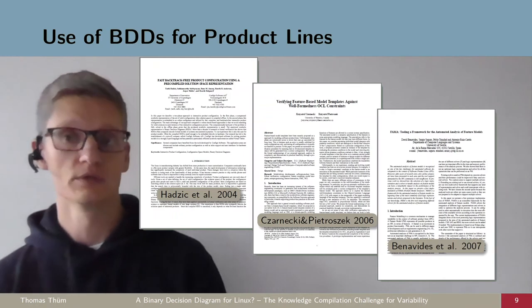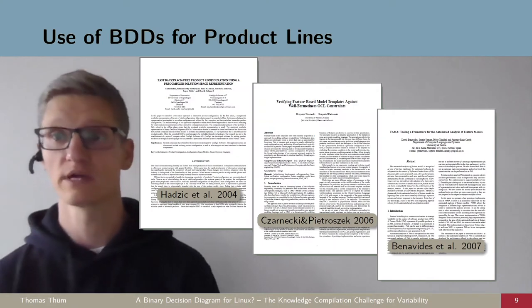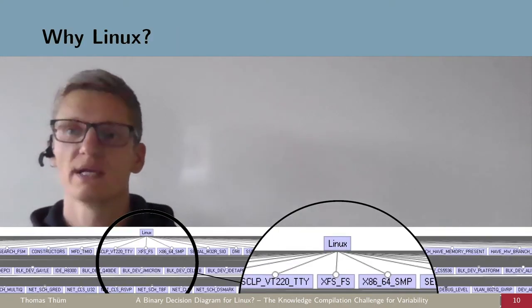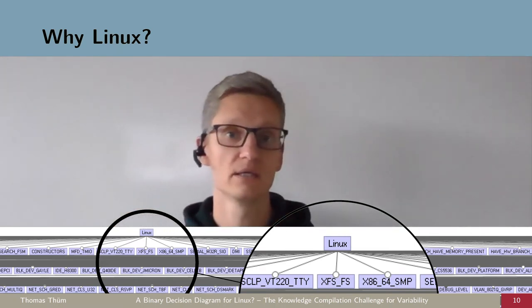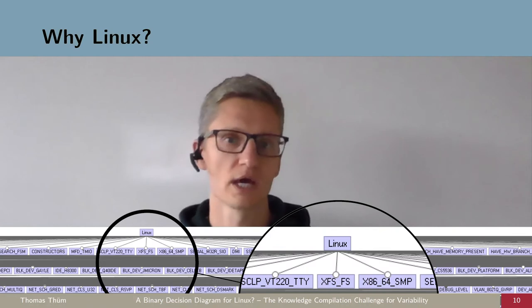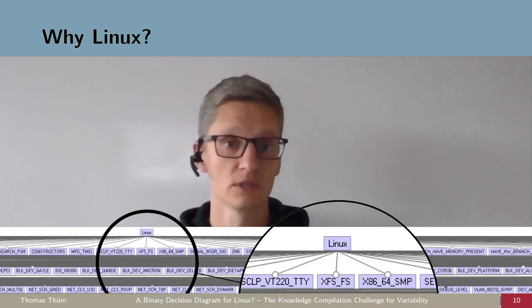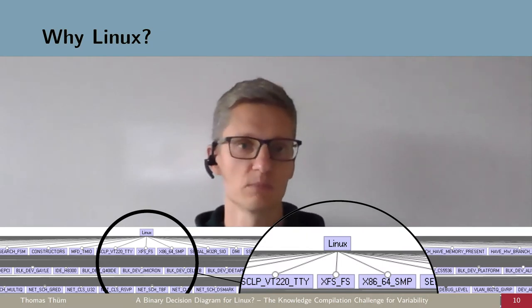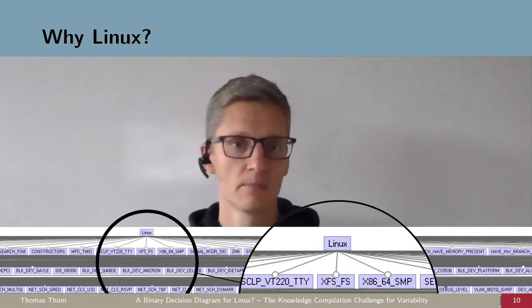But all these research papers are nice and novel, but it's interesting to understand whether they scale to Linux or not. But then why Linux? Why not any other product line? Linux is a very common benchmark. Many product line analyses have been applied to Linux and it's typically challenging to scale to the size of Linux because Linux has so many features and so many constraints at the same time. Many applications, it's fine to work with many features if you have few constraints. You can also cope with many constraints if you have few features, but the combination of many features and many constraints is challenging.